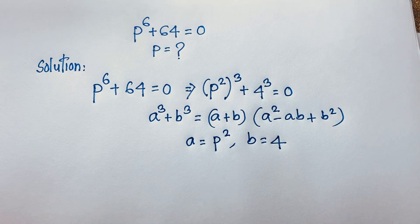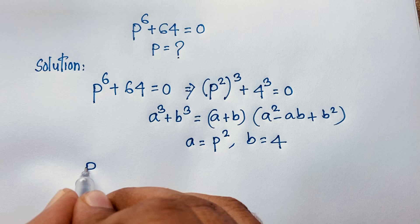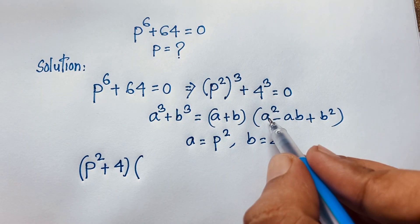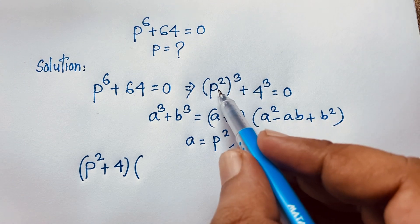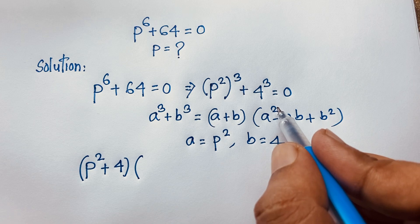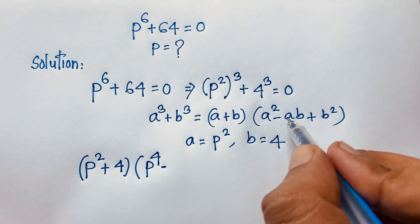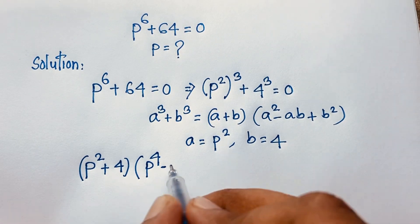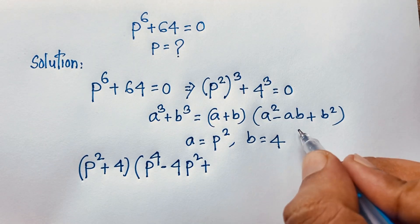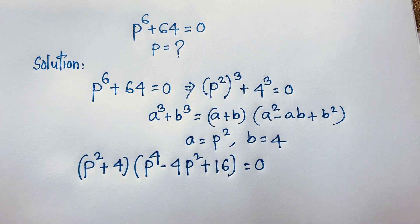Applying this formula, a is equal to p squared and b is equal to 4. So the expression becomes (p squared plus 4) times (p to the power 4 minus 4p squared plus b squared). Here b squared is 4 squared which equals 16. So we have (p squared plus 4)(p to the power 4 minus 4p squared plus 16) is equal to zero.